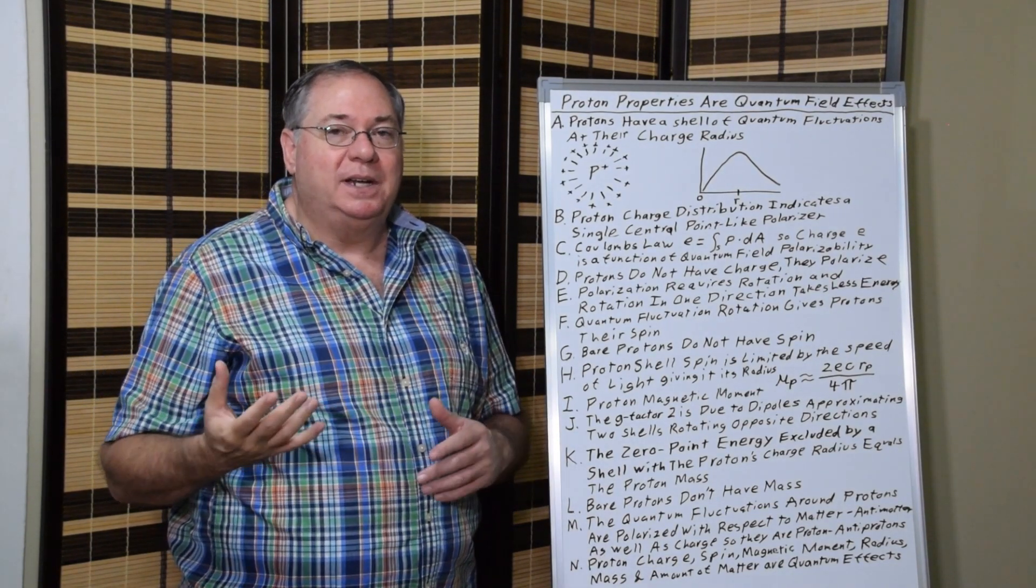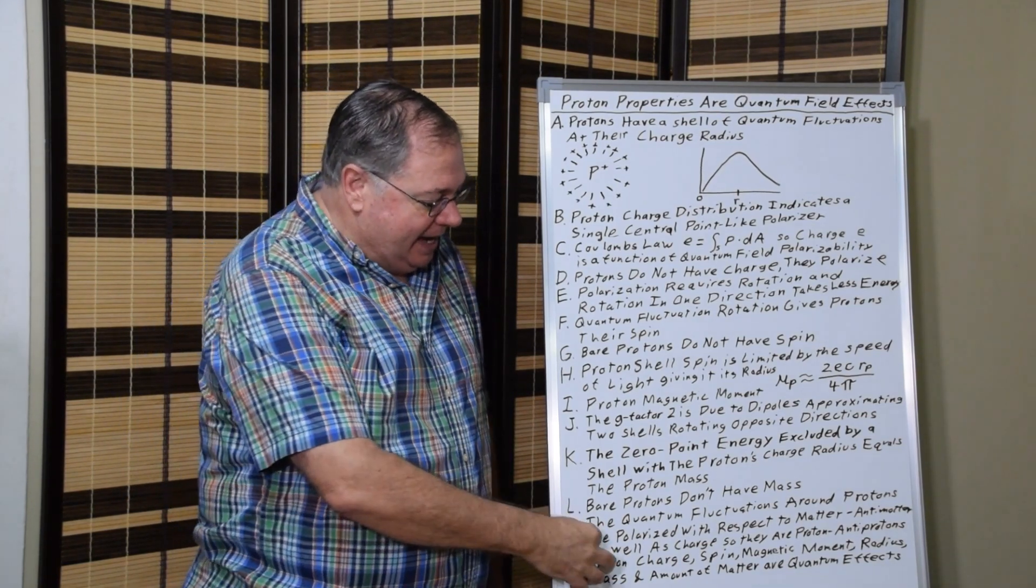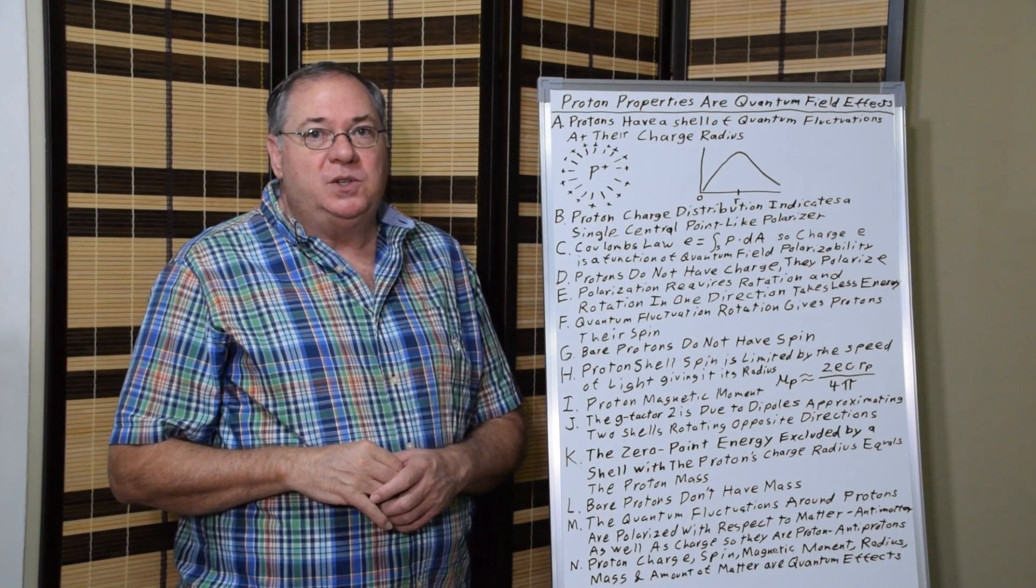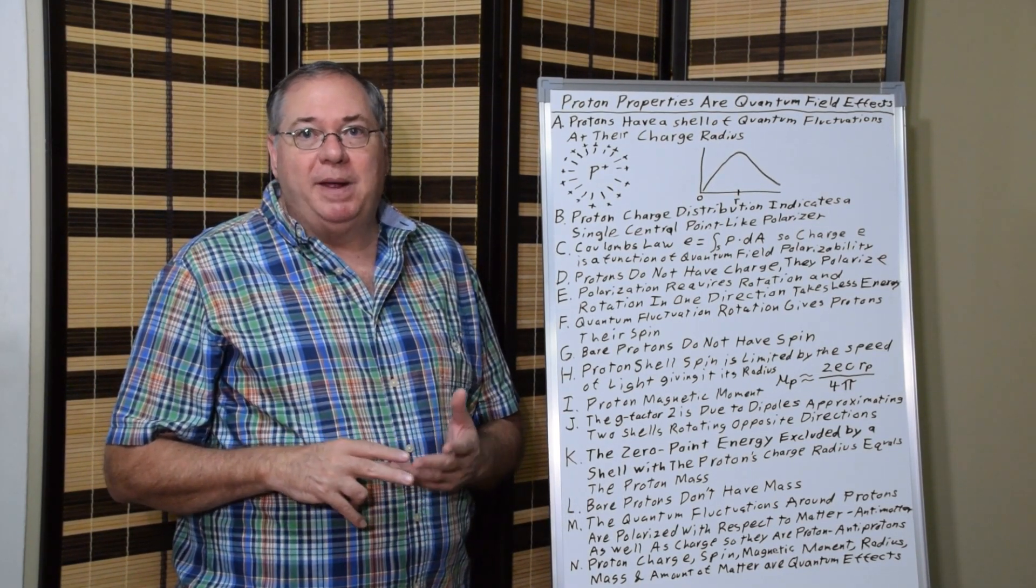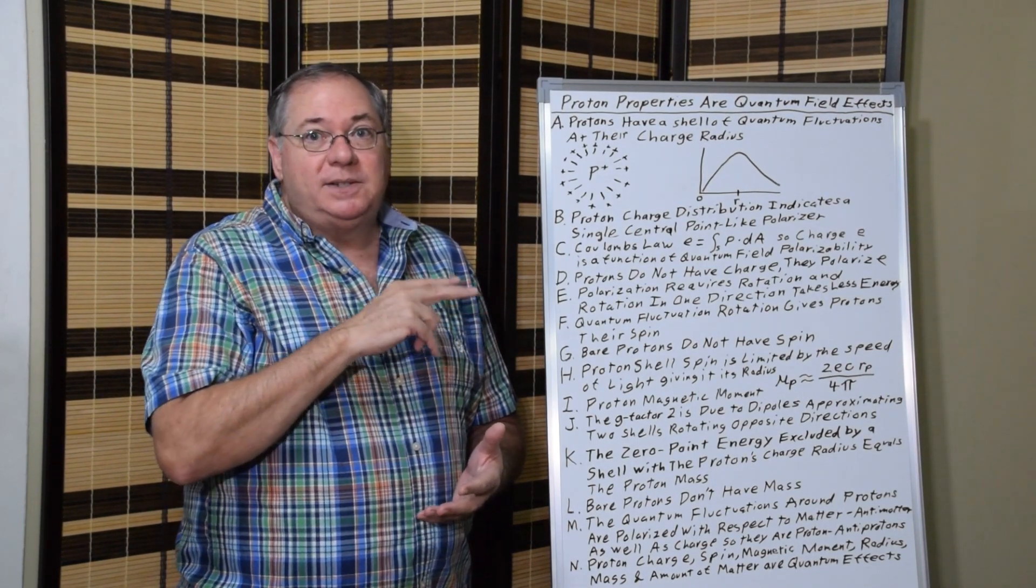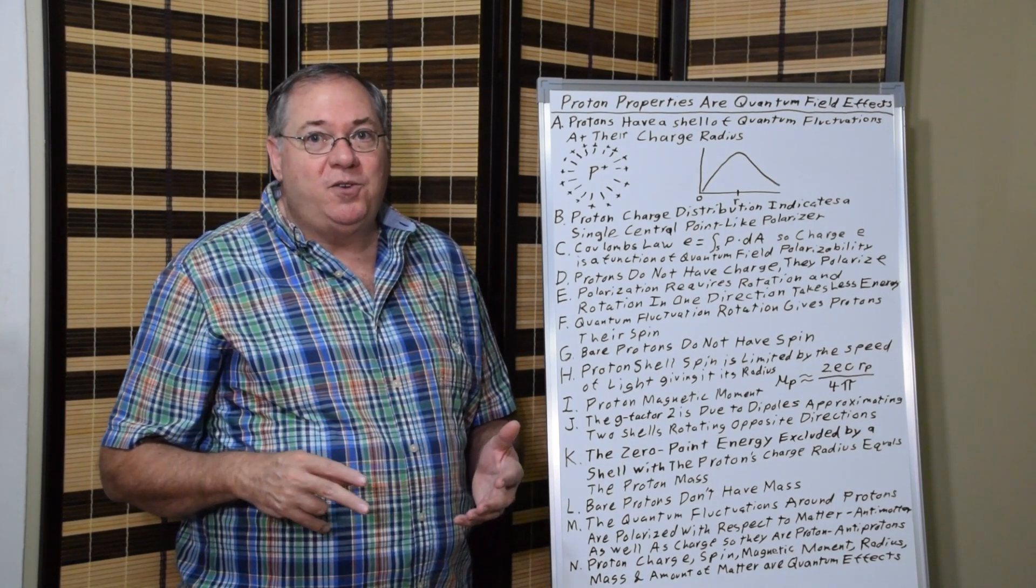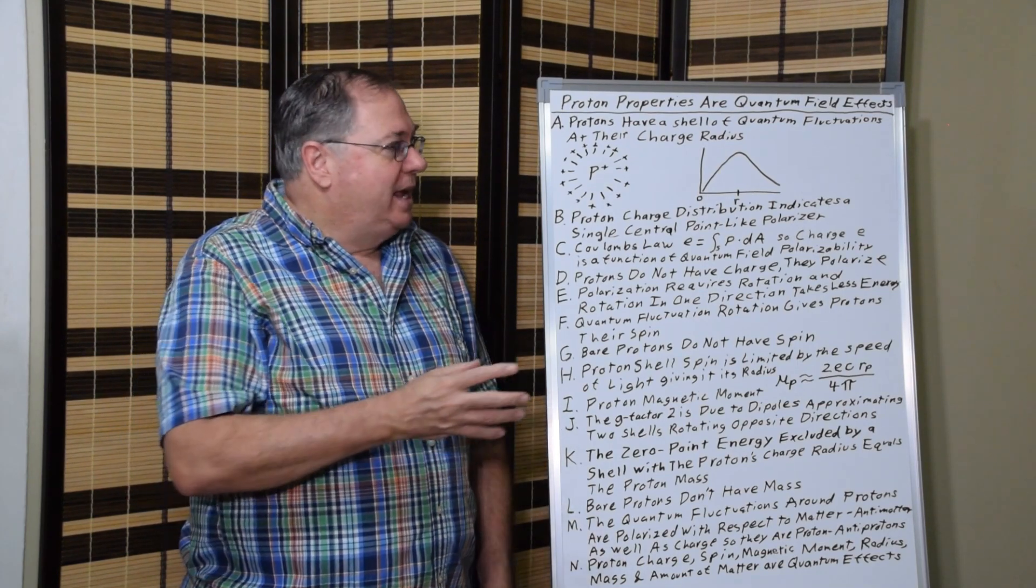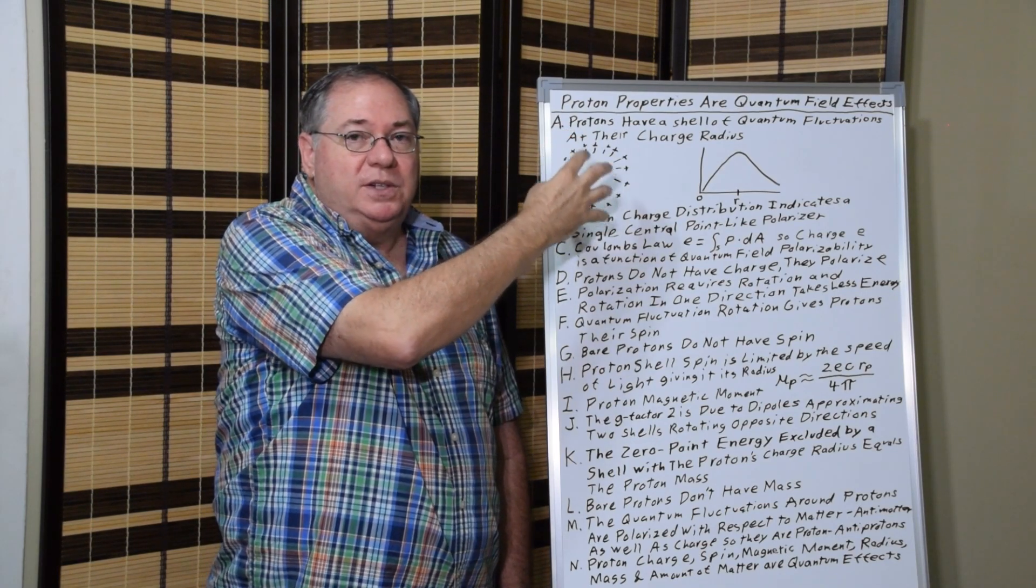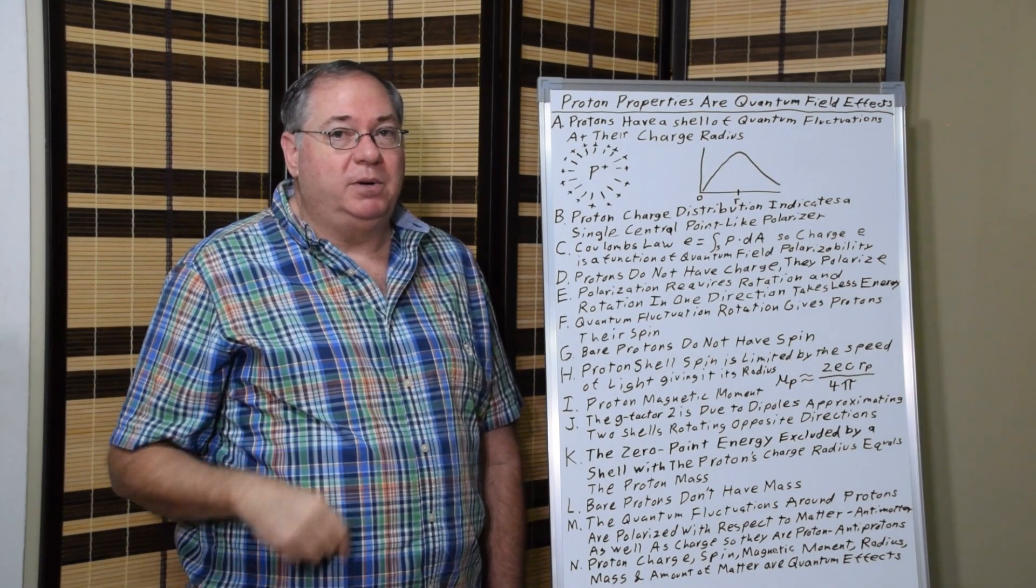And so not only do we get all these other properties, we get the amount of matter or antimatter around the proton. In the case of proton matter, antiproton would be antimatter. So we get that as well in the list of properties. So none of these properties, charge, mass, magnetic moment, spin, its radius, its scattering, its charge distribution, all of that can be accounted with the spherical structure of the proton, the spherical shell structure of quantum fluctuations around the bare proton.